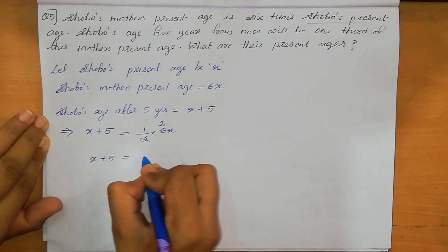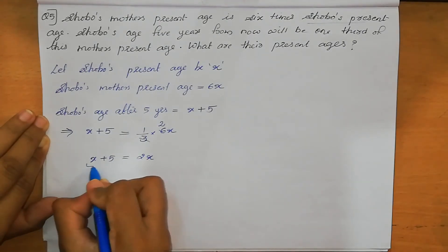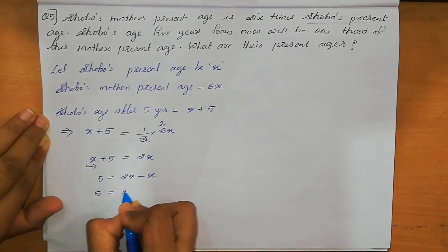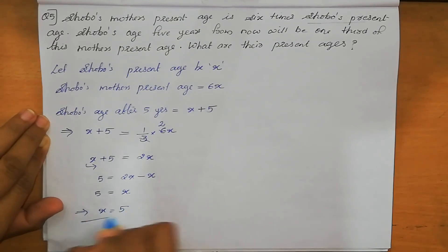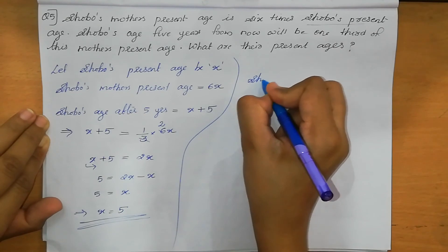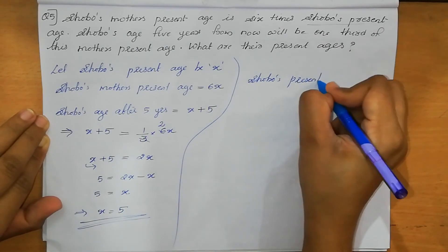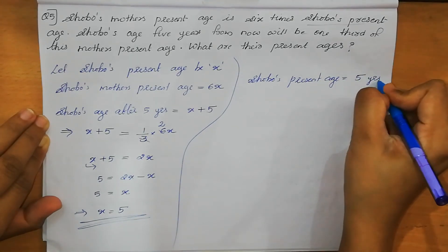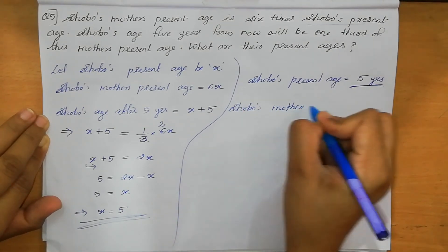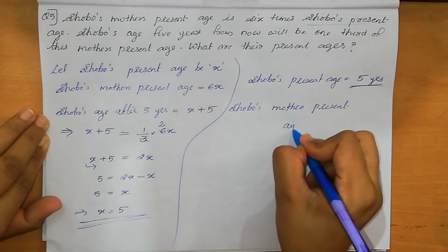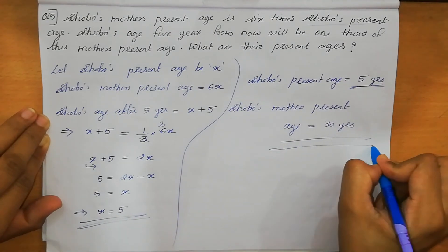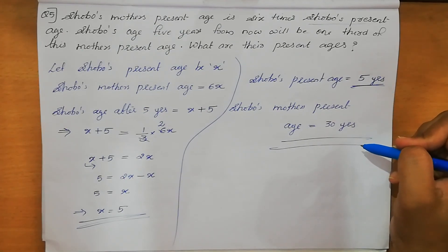X plus 5 equal to one third of 6X, which equals 2X. So X plus 5 equal to 2X. Shifting X: 5 equal to 2X minus X equal to X. Therefore X equal to 5. Shobo's present age equal to 5 years. Mother's present age equal to 6X, that means 6 into 5 equals 30 years. This is the answer.